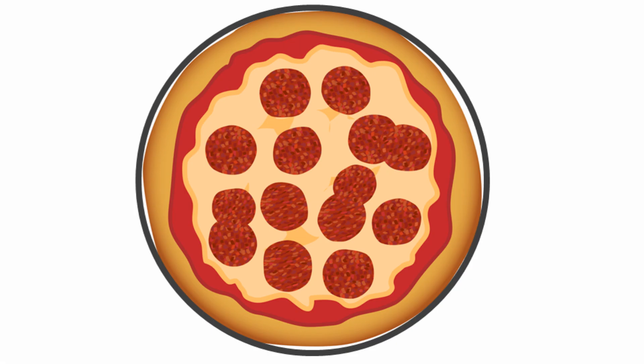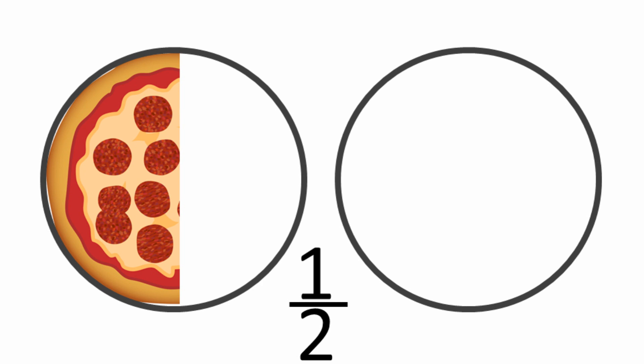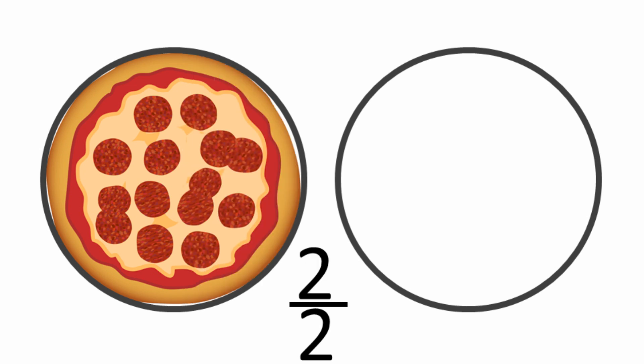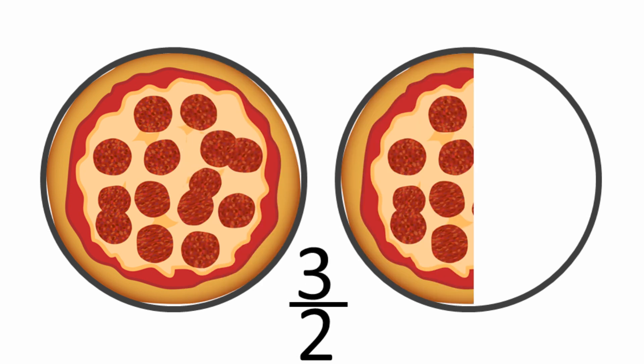Again, pizza can help if your child's having difficulty understanding the concept here. Here we have half a pizza. Here we have two halves of a pizza. And here we have three halves. Looking at the picture, it's clear that another way of saying this is that we have one and a half pizzas. So 3 over 2 is the same as one and a half.